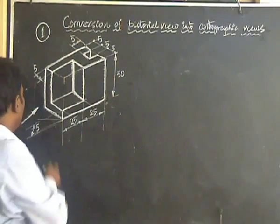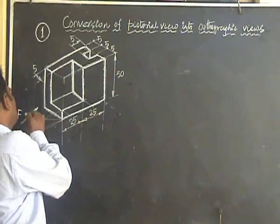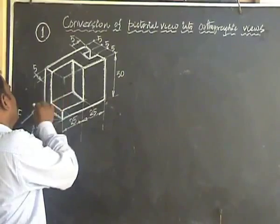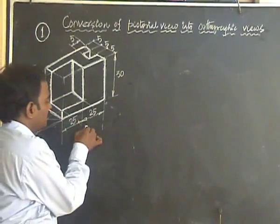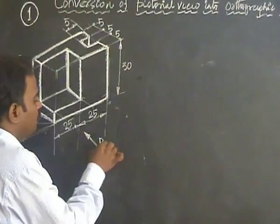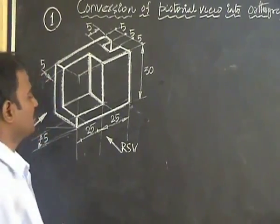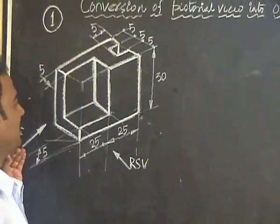Let's see how we convert this picture into views. First, the direction is very important. Here the direction is clearly specified. You have to view through this. This direction should be taken as the front side, so obviously this side becomes the right side view. If the direction is not specified you are free to choose the direction. Otherwise we stick to the direction.